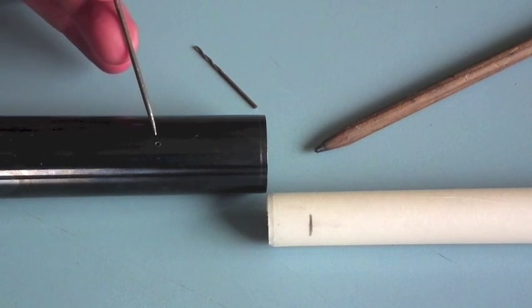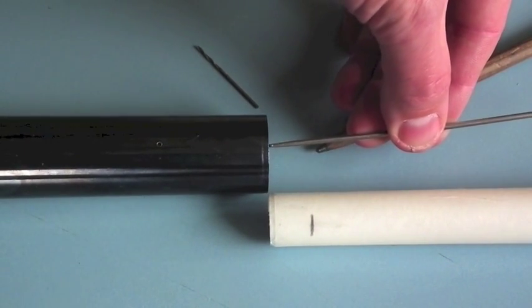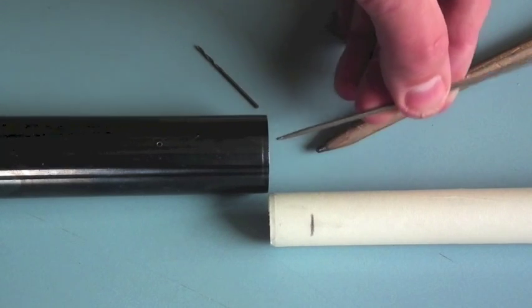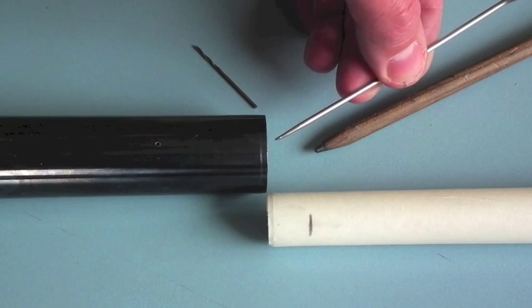Once you've carefully drilled the regulator breathe hole into your air reservoir, it is most important that you deburr the inside of the breathe hole and give the inside of the air reservoir a light clean and polish.